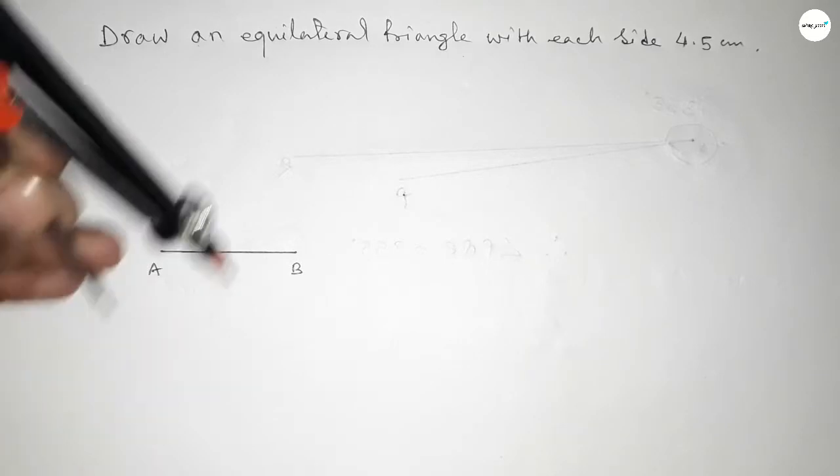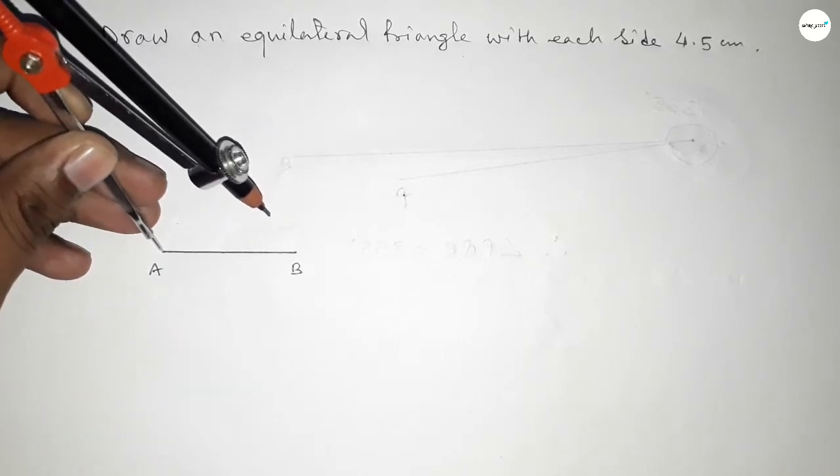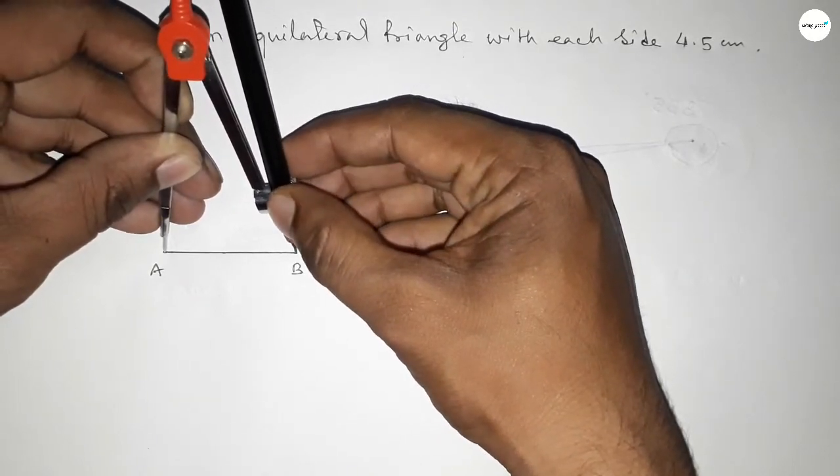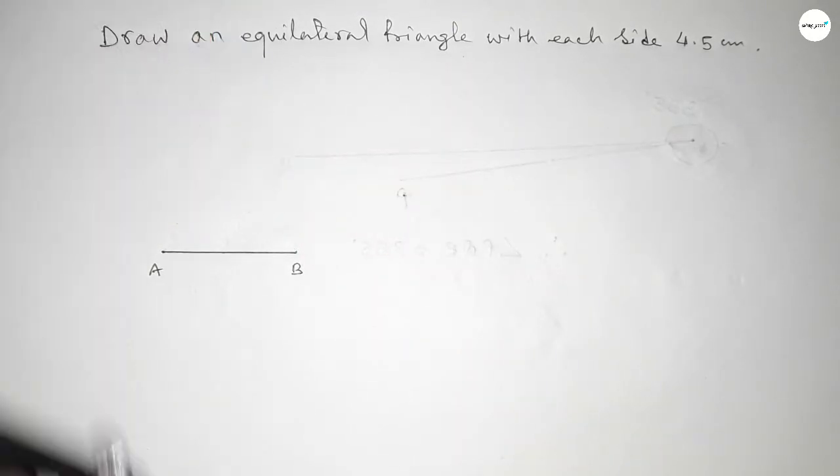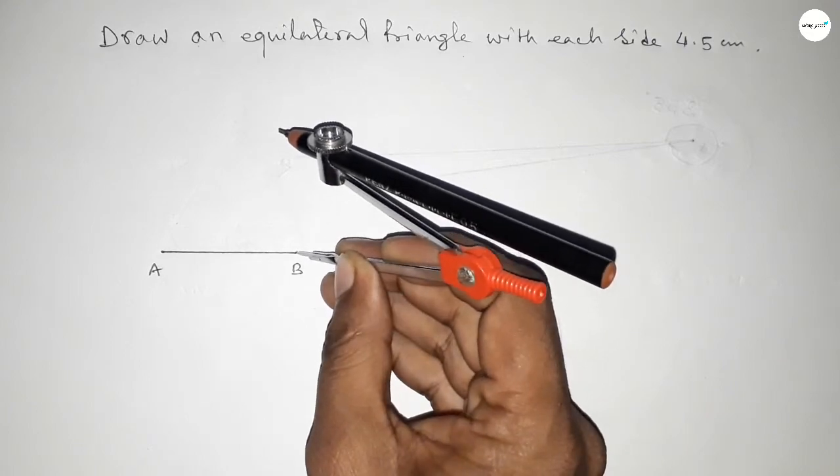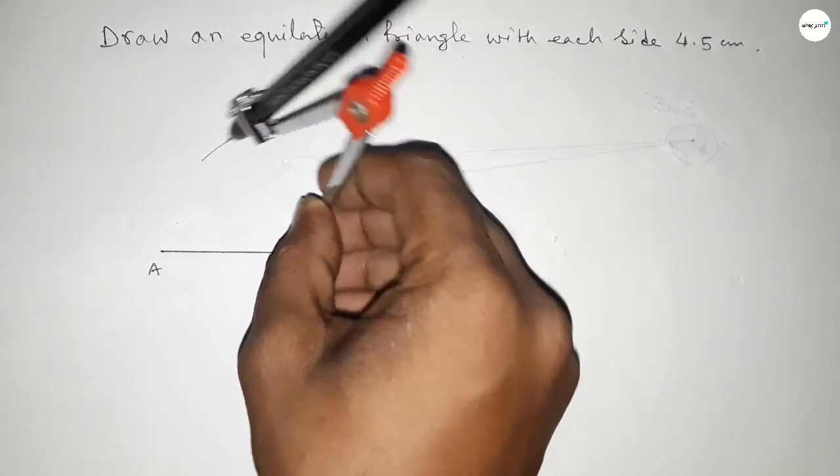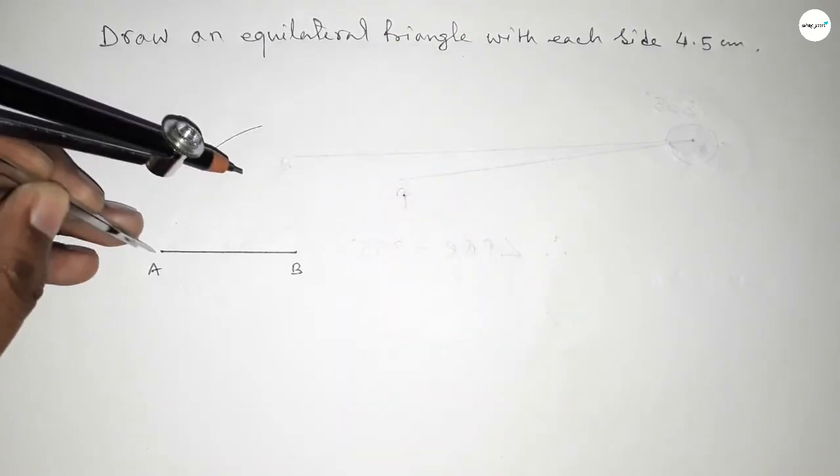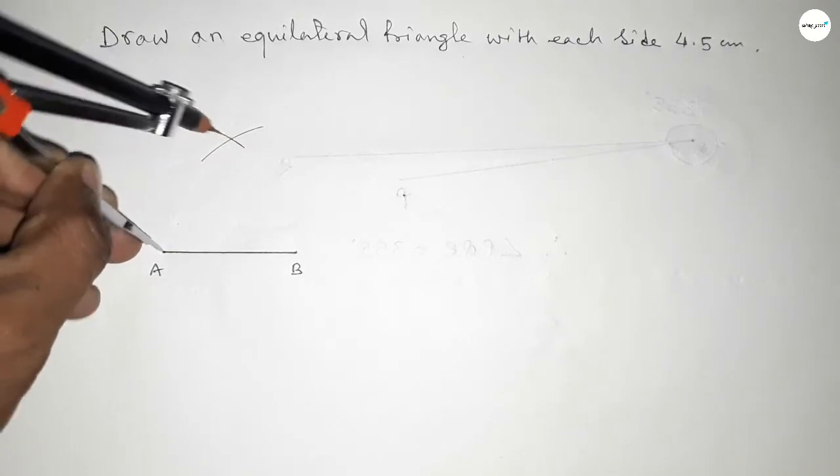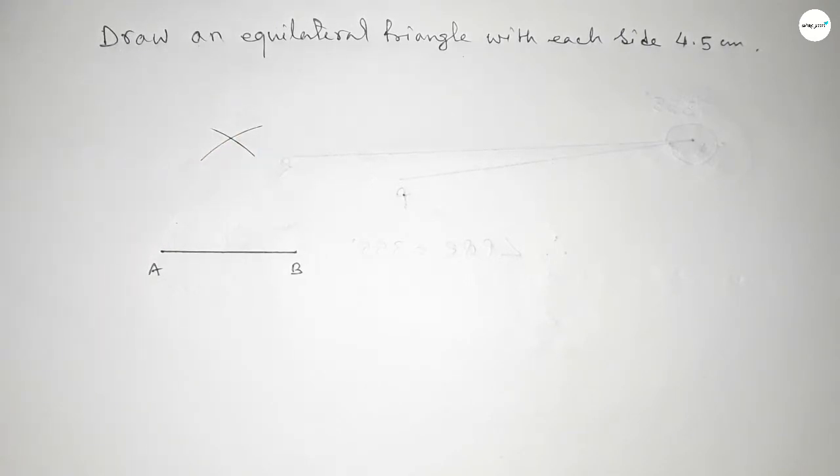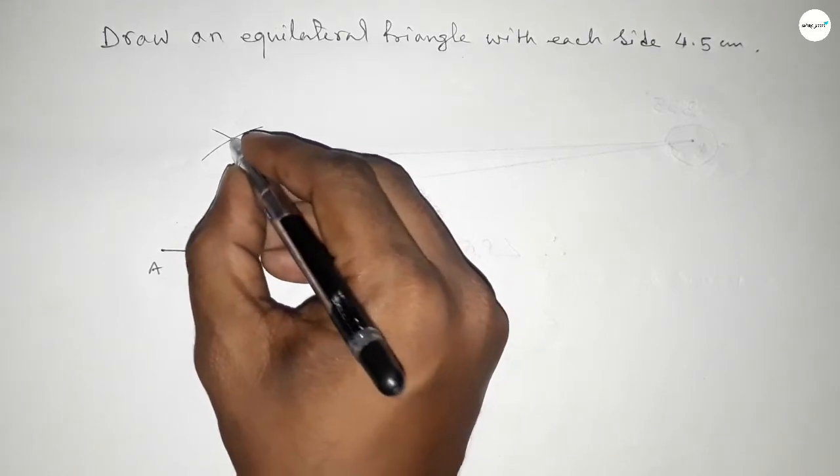Now taking the length AB by compass and putting the compass here and drawing an arc here with same length, and putting the compass here and cut here. So both curves intersect at a point.